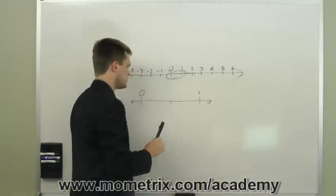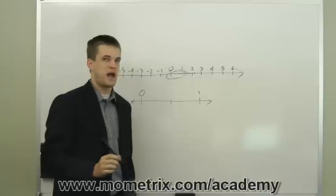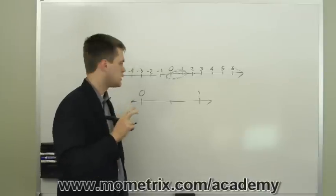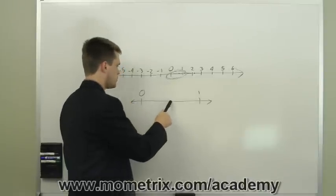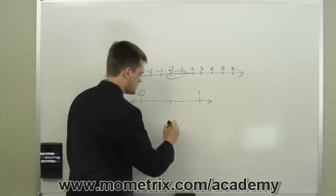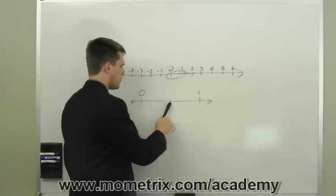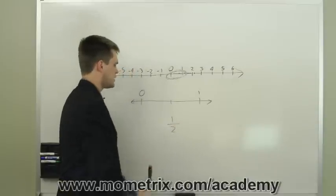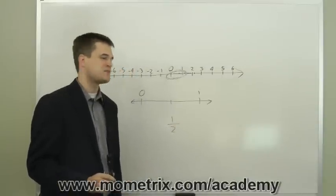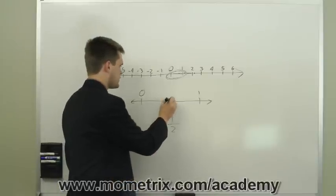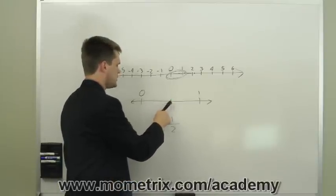If we put one right in the middle, we've cut it in half or into two pieces. Two pieces, so we have a two on the bottom of our fraction. If we just go one of those two pieces, we have one over two or one half. That is what this point here is.